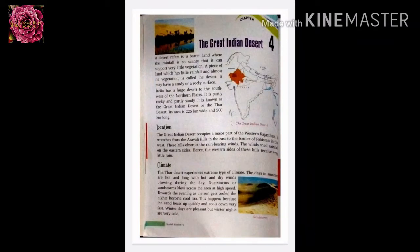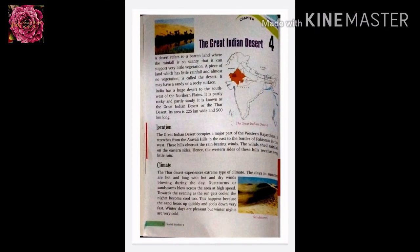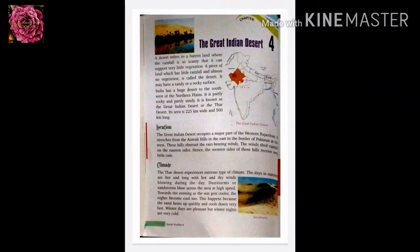Now we will learn about climate. The Thar Desert experiences an extreme type of climate. The days in summer are hot and long, with hot and dry winds blowing during the day. Dust storms or sand storms blow across the area at high speed. The daytime is extremely warm, but nights are very cold. The sand heats up quickly and cools down very fast. Winter days are pleasant but winter nights are very cold.